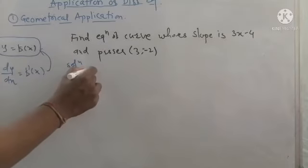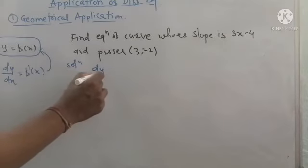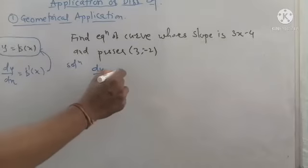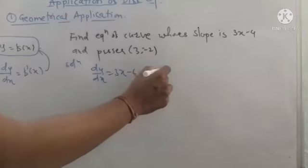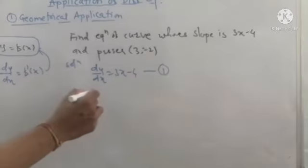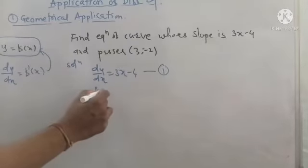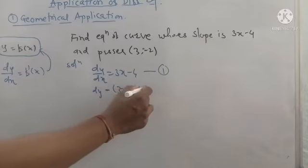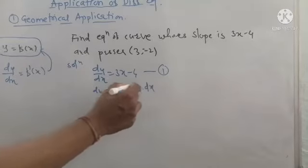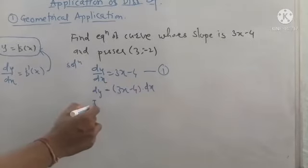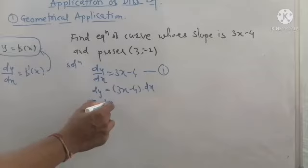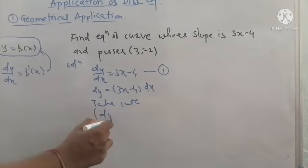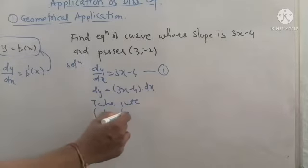In the next example, we find the equation of a curve whose slope is 3x minus 4 and which passes through the point (3, minus 2). The given slope dy/dx = 3x minus 4 is a differential equation. We separate variables by moving dx to the right-hand side and take integration on both sides.